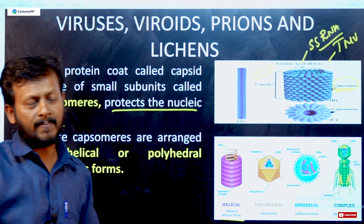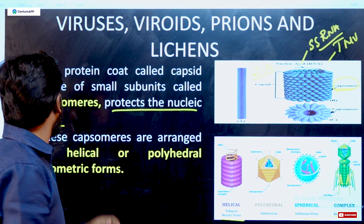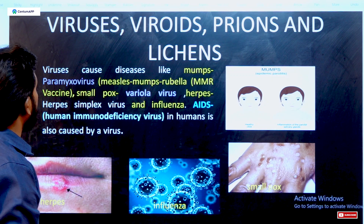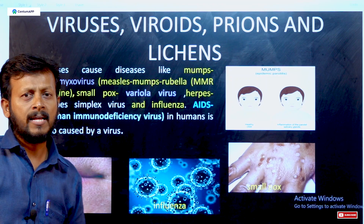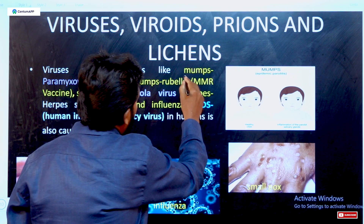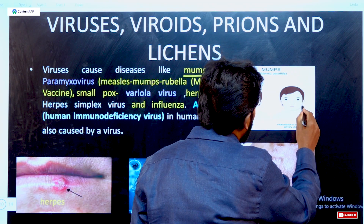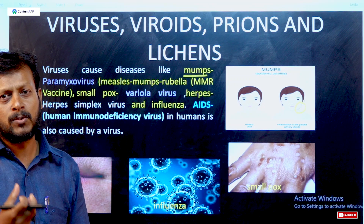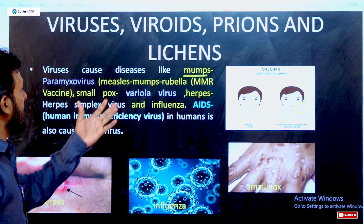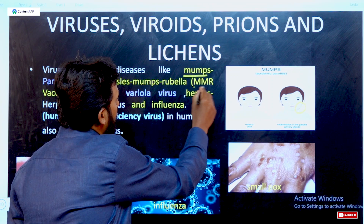Viruses affect animals and plants. In animals, mumps mostly affects children aged 2 to 12 years, affecting the salivary glands in the buccal cavity. The remedy is the MMR vaccine — measles, mumps, and rubella vaccine.